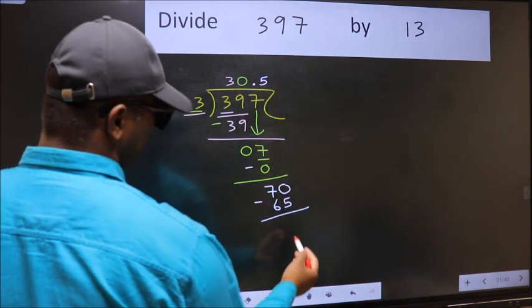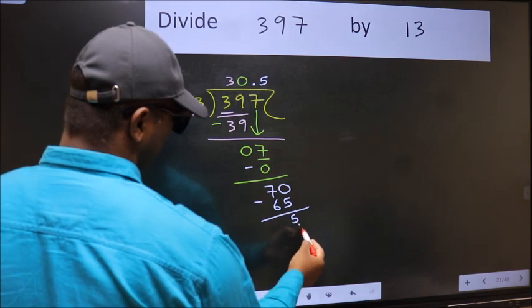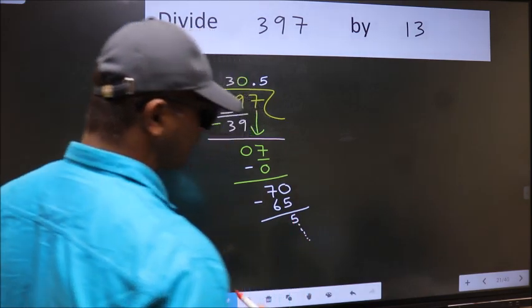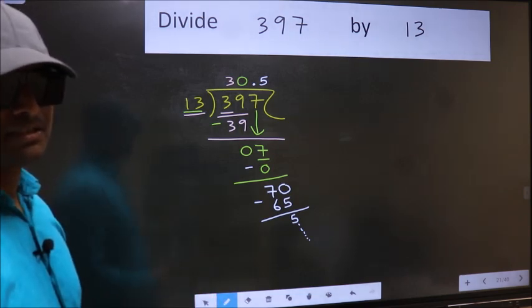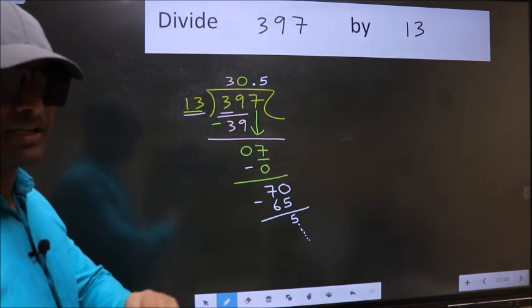Now we should subtract. We get 5. You continue the division. I am not doing that. Did you understand where the mistake happens? You should not do that mistake.